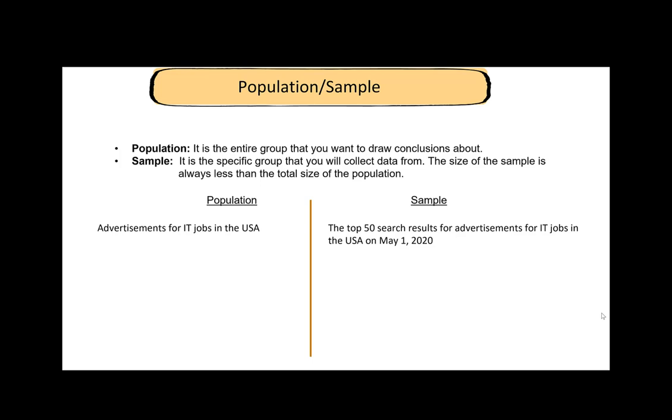Another example is, say we want to draw some conclusion or study something about the undergraduate students in the entire Netherlands. However, instead we can pick a sample of 300 undergraduate students from three universities there. Population is what we ideally want to study and sample is basically the data that we end up collecting. Typically the data that we collect is a subset of the population and that is a sample.